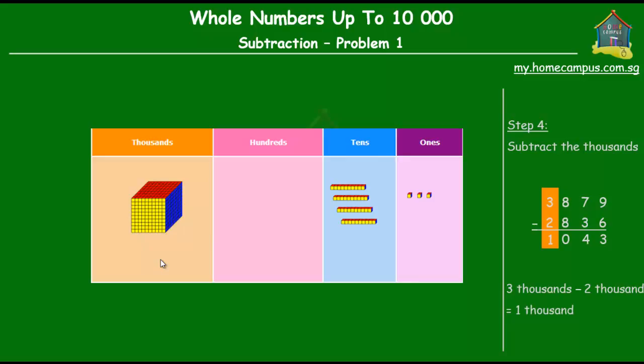So there you go. When you subtract 2836 from 3879, you have 1 thousand, 0 hundreds, 4 tens and 3 ones left. So the difference between the number of fishes in the two fish tanks is 1043.